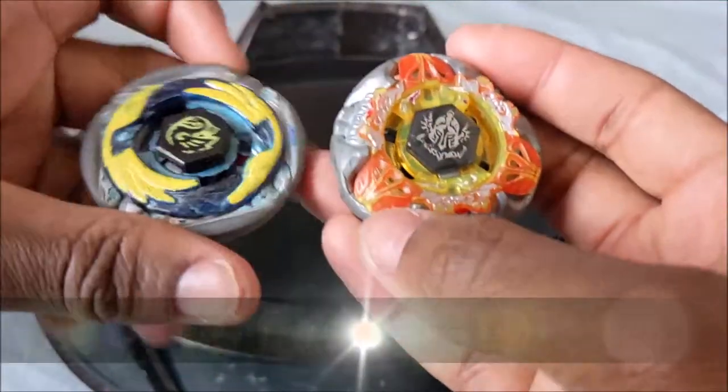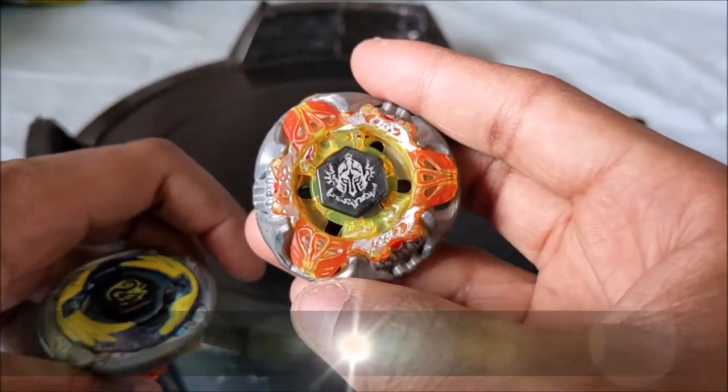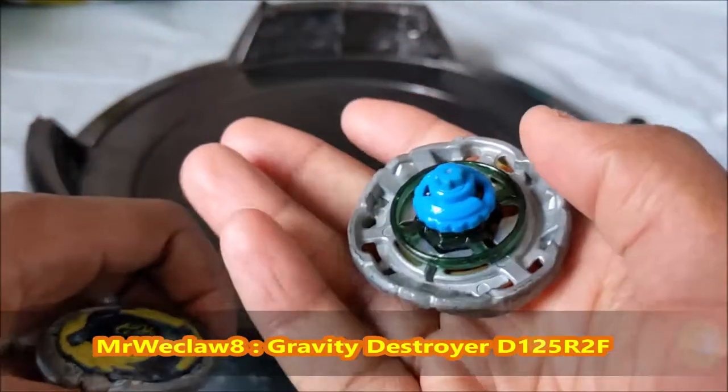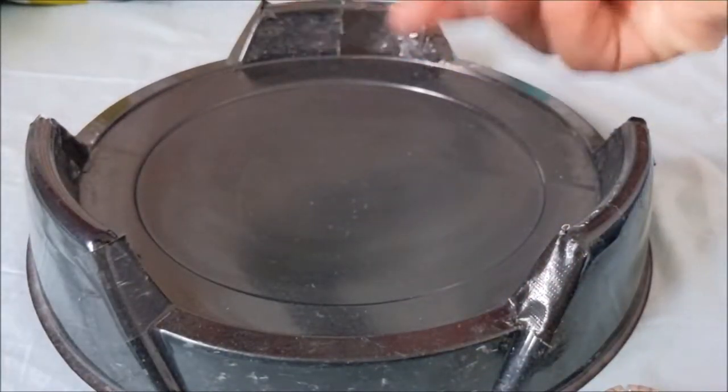Hello Blazers, welcome to this video. Today we have Jerrie11 with Flame Cygnus 230TB against Mr. Weaklow 8 and Gravity Destroyer D125 R2F. Let's go!